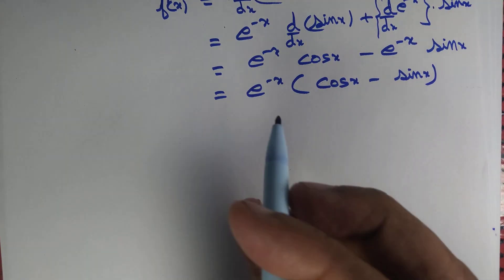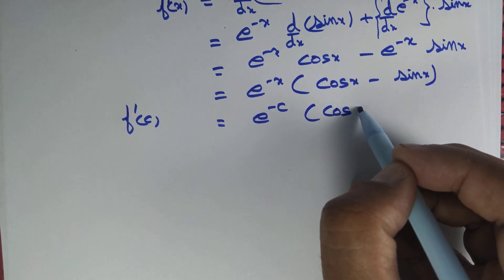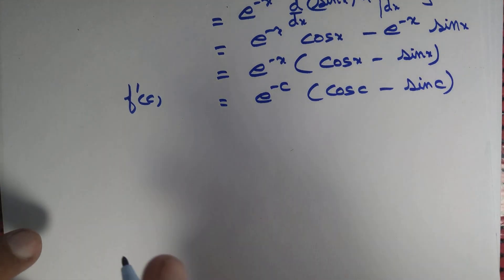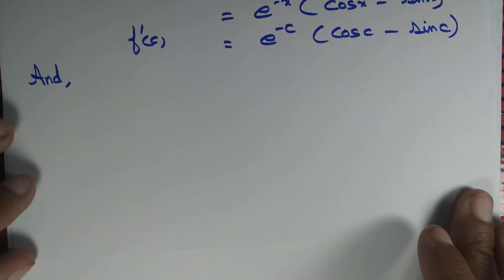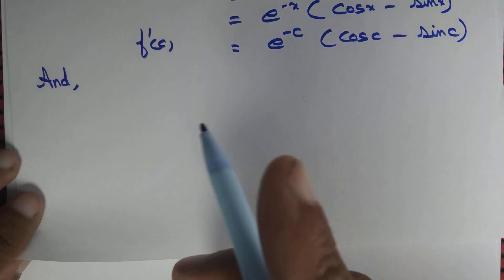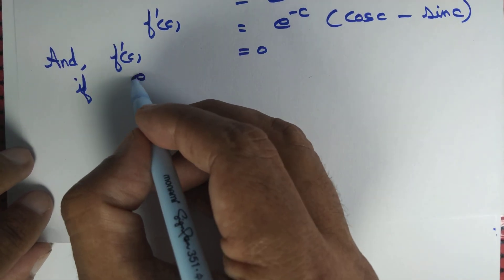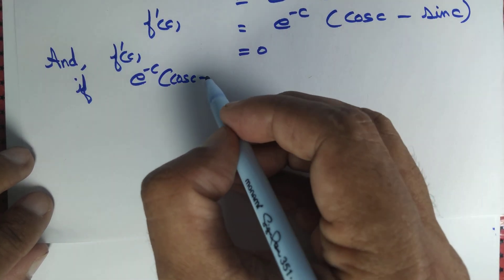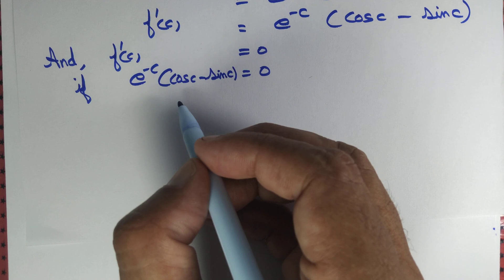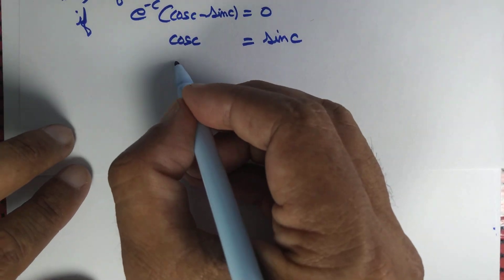That is our f'(x). We want f'(c) = 0, so f'(c) = e^(-c)(cos c − sin c) = 0. Since e^(-c) can never be equal to 0, we require cos(c) = sin(c), or in other words, tan(c) = 1.